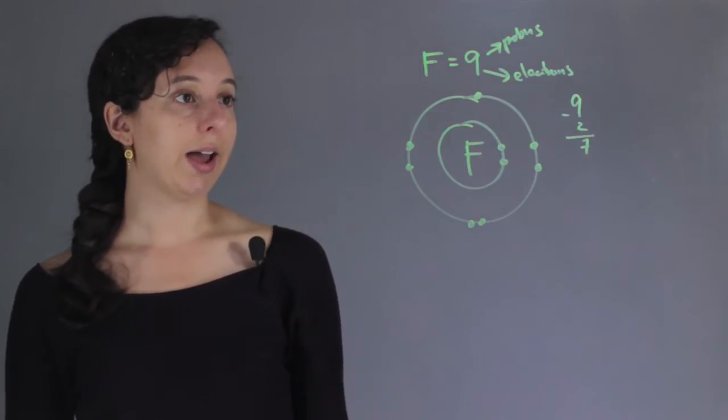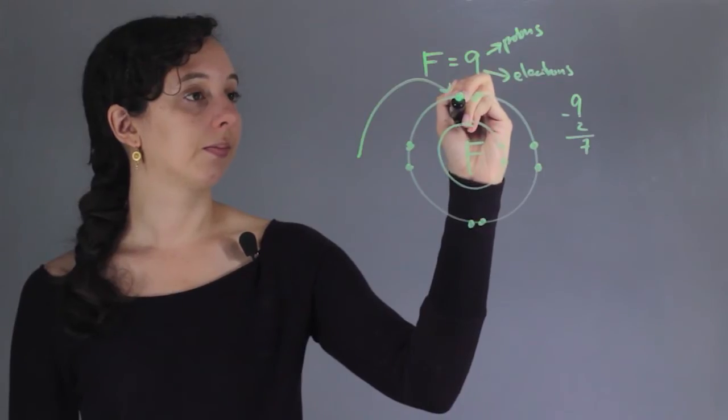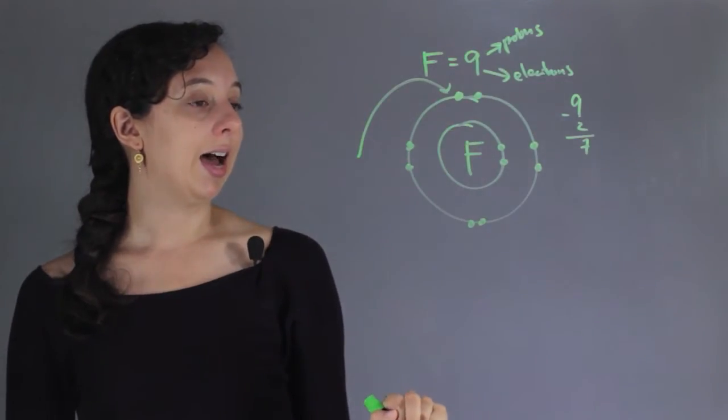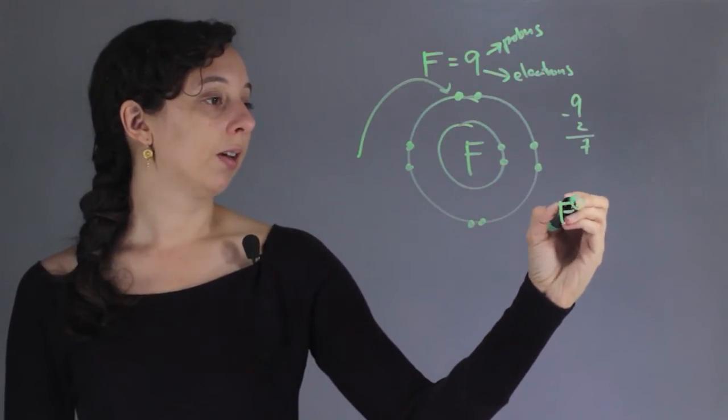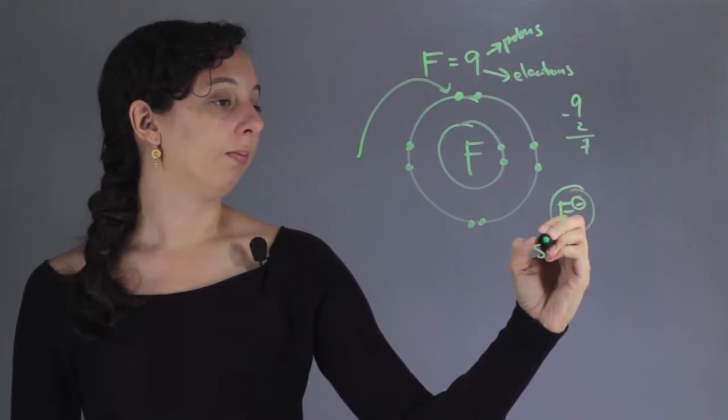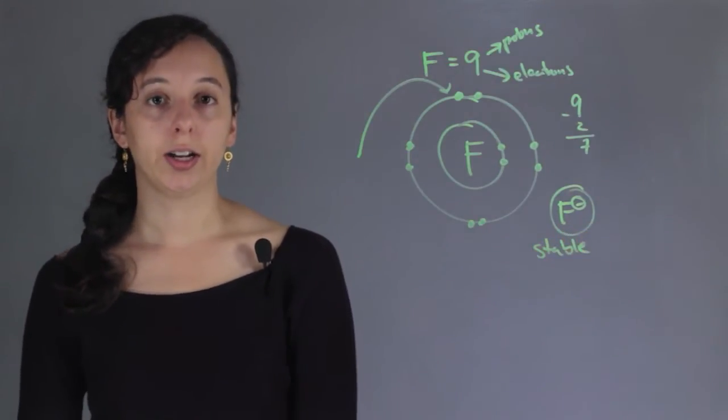If fluorine somehow gets that extra electron, and it has a full valence shell of 8, it will become negative, but it will be very stable. So in this case, adding an electron increases stability.